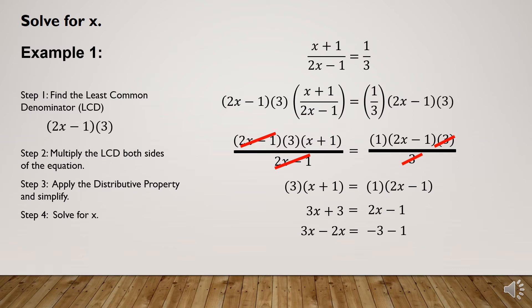Combining like terms: 3x - 2x = x, which equals negative 3 minus 1, which equals negative 4. So x = -4 is now the value of x.